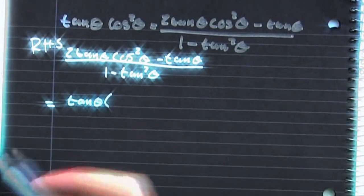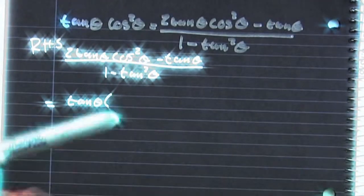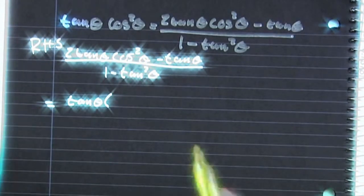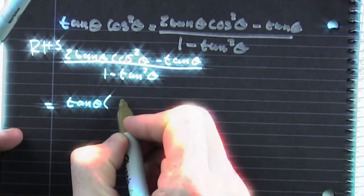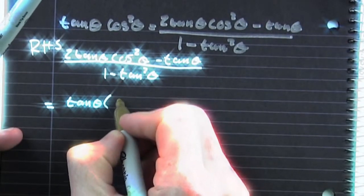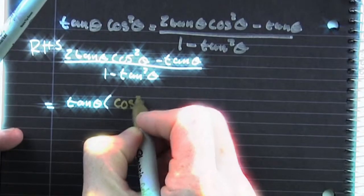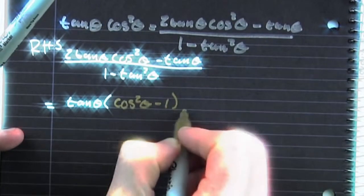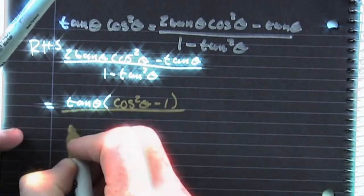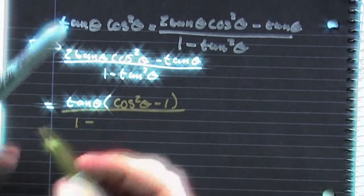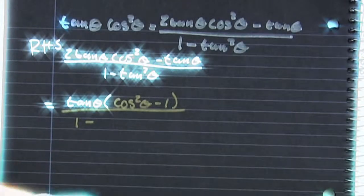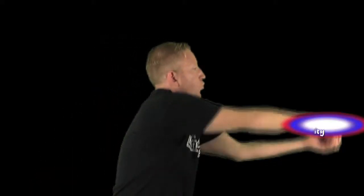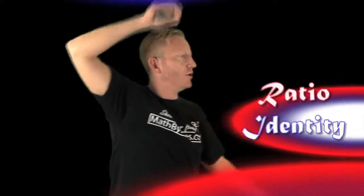And then we see that there's a common factor there — there's a tangent in both of those. And it's all over 1 minus the ratio.